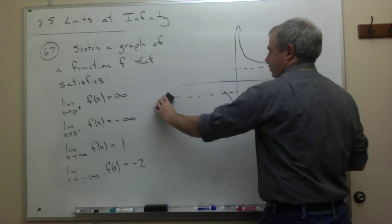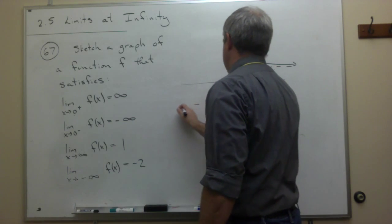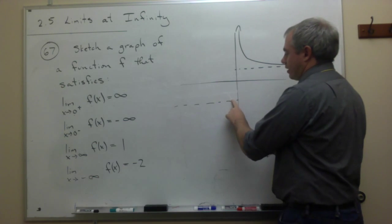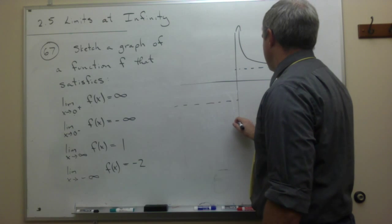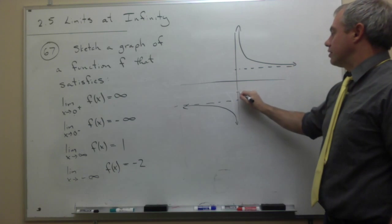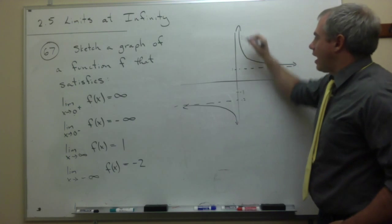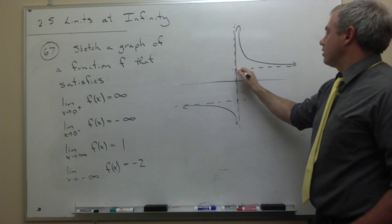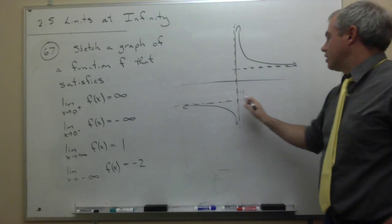Oops, threw that in the wrong spot. All right. And I could change this, maybe I will real quick. I'll just change this real quick. I still want to go down towards negative infinity, but now we're going to curve this into negative 2. So here's minus 1, minus 2, here's 1. And so right now I have this vertical asymptote at 0, I have a horizontal asymptote at 1, and I have a horizontal asymptote at negative 2.